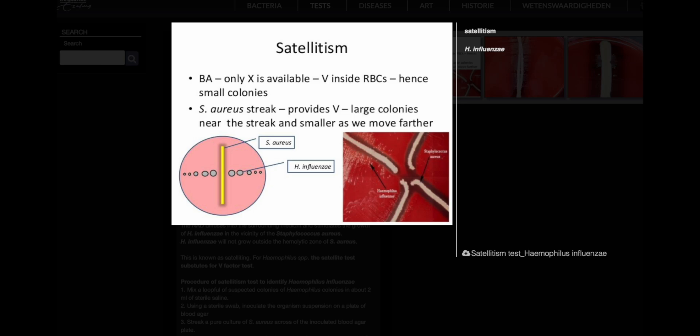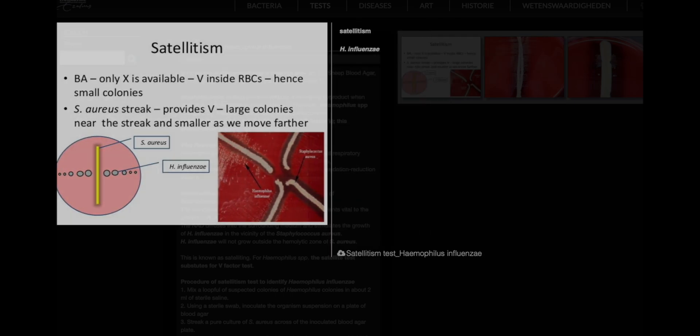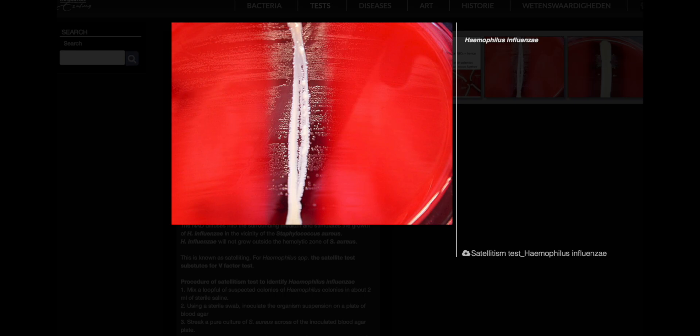Staphylococcus aureus, on the other hand, produces NAD as a byproduct when cultured on blood agar. This enables Haemophilus species to grow in close proximity to aureus colonies, a phenomenon known as satelliting.